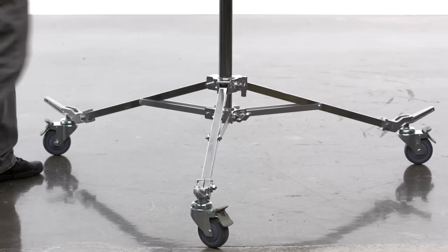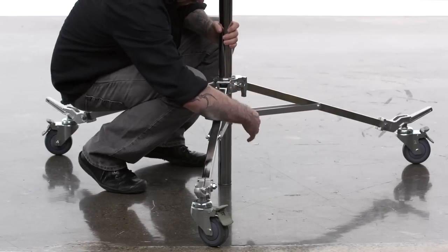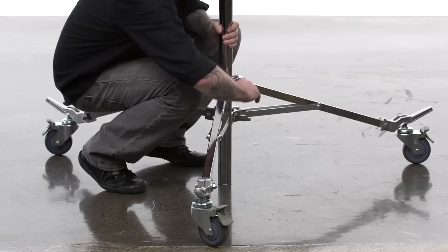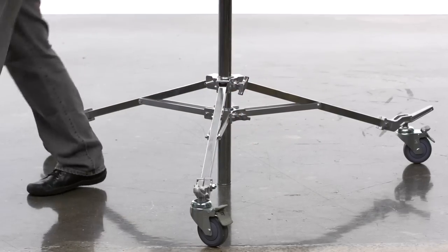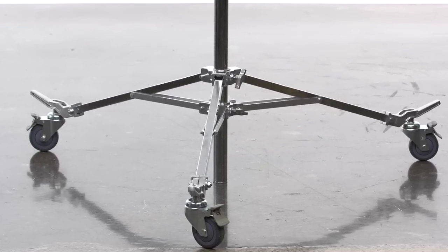By loosening both knobs securing the base to the main riser section, you can lower the main riser section until it makes a fourth point of contact with the ground. This not only lowers your center of gravity, but provides more stability for heavy loads or windy situations.